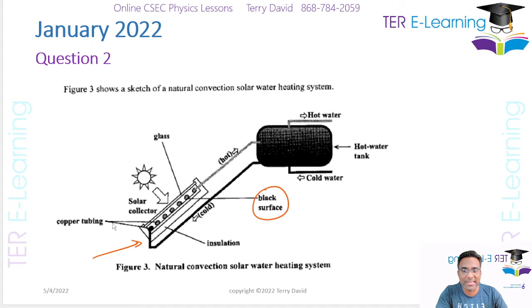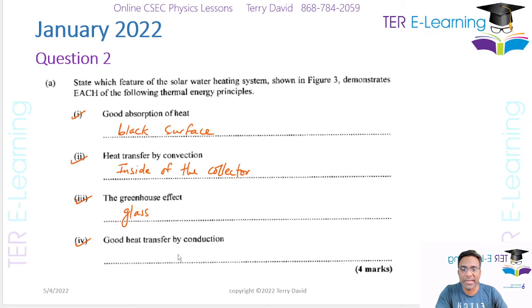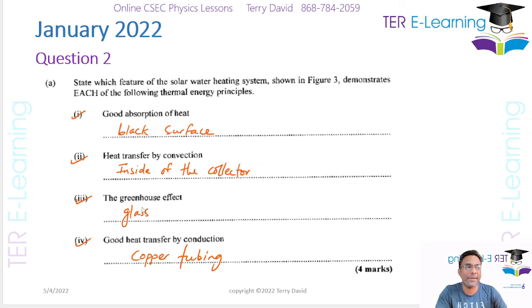The next one: good heat transfer by conduction. In the design you have copper tubing — copper metal is a good conductor of thermal energy. So the answer here is the copper tubing. We get one mark for each of these.